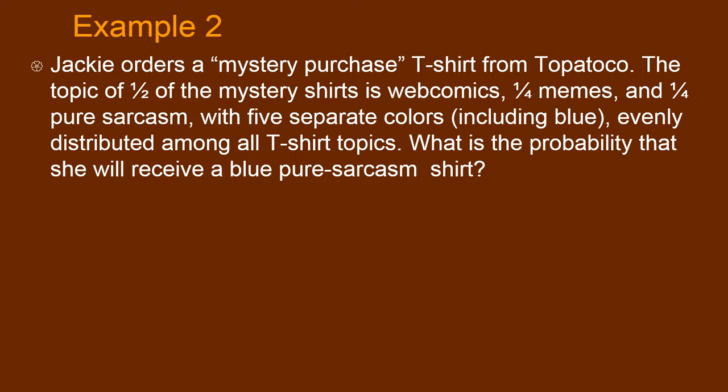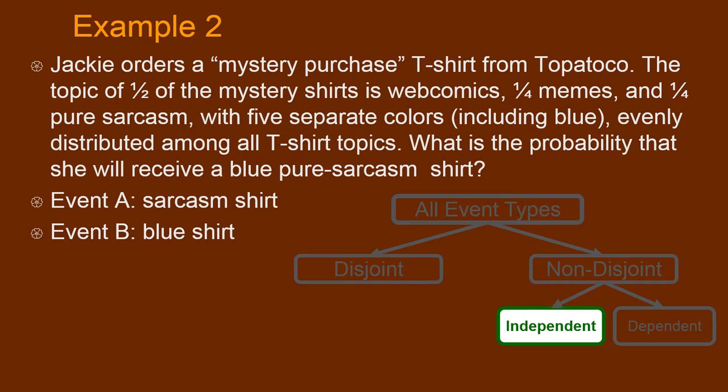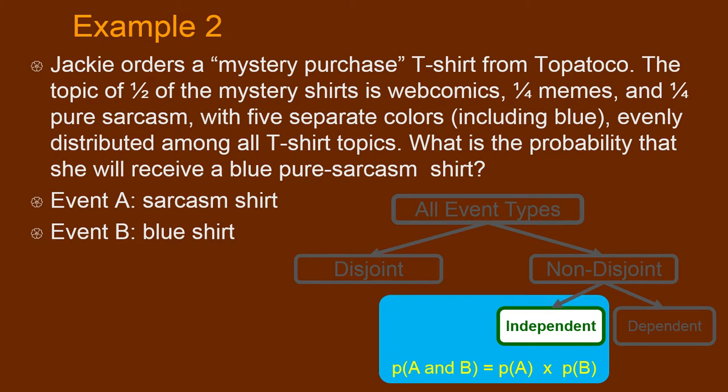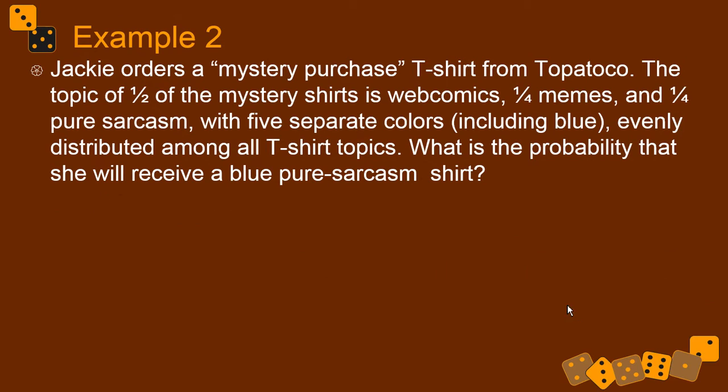Is this an and or an or situation? This is and, blue and sarcasm. So what's the probability of both of those things happening? The A and B. And is this independent? Are those two things independent? Well, I took some pains in the example to describe things being independent. The probability of getting a certain topic of shirt is not associated in any way. It doesn't affect, isn't affected by the probability of getting a certain color of shirt. So yeah, we can use the special multiplication rule and just multiply the probabilities.